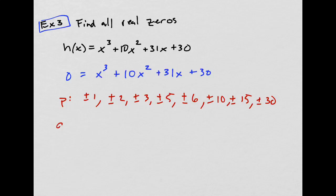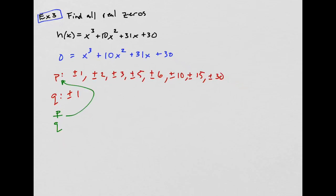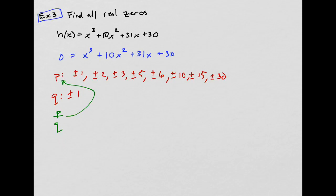The next thing is to write down my q's, and that's just plus or minus 1. I love it when the first coefficient is just 1, because then I don't really have to like, my p divided by q, p over q, that's the same thing as just p. And that only happens when q is 1, so really I don't have to rewrite anything and I can just start testing.